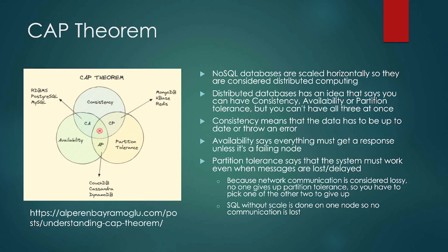When we talk about NoSQL databases, people commonly discuss something called CAP theorem. Because NoSQL databases are scaled horizontally, they are considered distributed computing. Distributed databases operate around three properties: consistency, availability, and partition tolerance — but you can only pick two. Consistency means data has to be up to date or throw an error. Availability means everything must get a response unless it's a failing node. Partition tolerance means the system must work even when messages are lost or delayed.